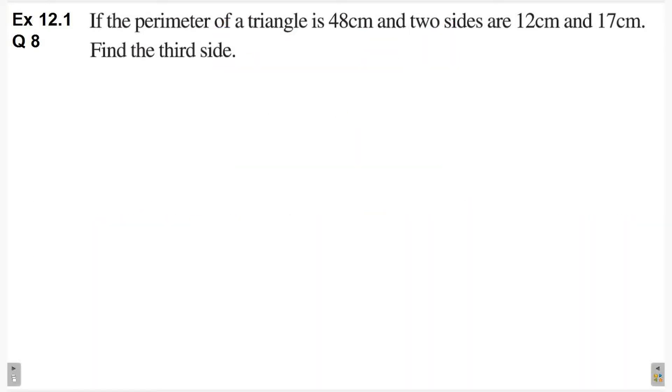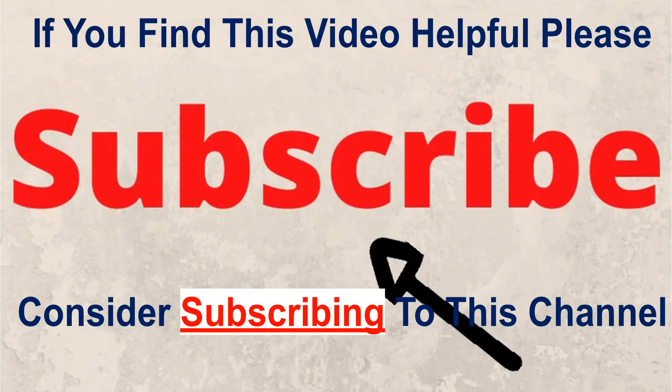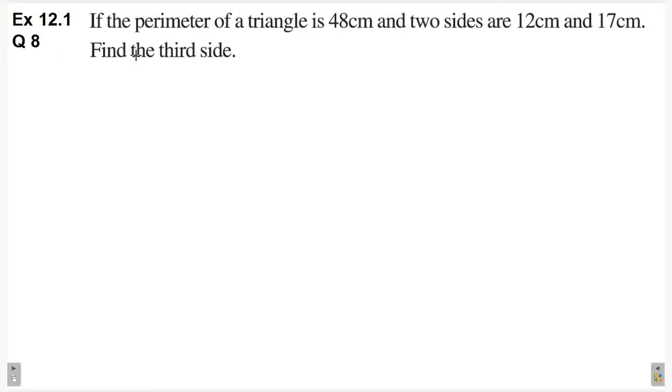Hello everyone, welcome back to this channel. In this video, we will solve question number 8 of exercise 12.1, class 6. If the perimeter of a triangle is 48 cm and two sides are 12 cm and 17 cm, find the third side.